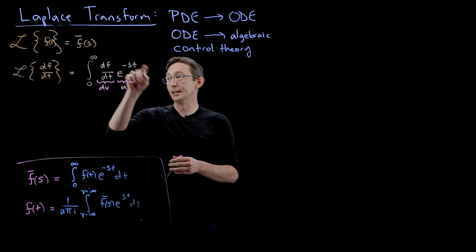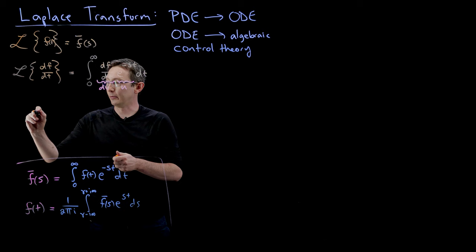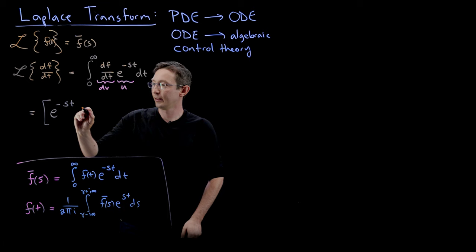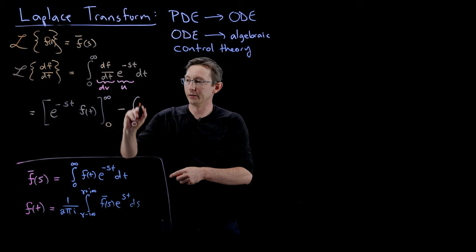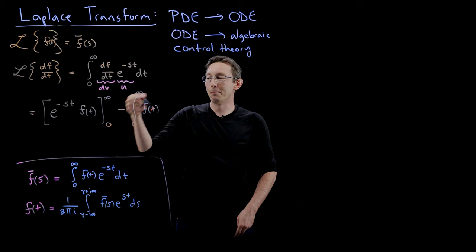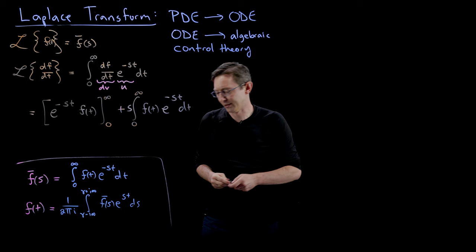Integration by parts tells me that the definite integral of U DV is UV minus the definite integral of V DU. So this equals UV — that's e to the minus ST times F (since if DV is dF/dT DT, then V is just F) — evaluated at the bounds 0 to infinity, minus the definite integral from 0 to infinity of V DU. V is just F of T, and DU with respect to T is minus S, so the minus S makes this a plus S times e to the minus ST DT.